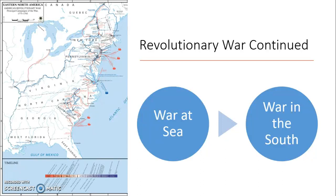At sea, the colonists fought the British in the Caribbean and elsewhere, but only because of French assistance — they didn't start the war with a Navy. France was pivotal in helping on the Caribbean islands and on the water generally. France's motivation to ally with the colonists likely included hoping to regain some of the territory they lost to England in the French and Indian War.